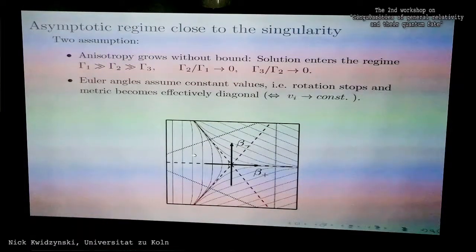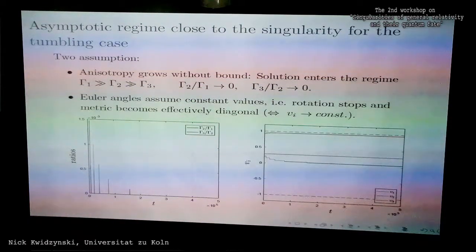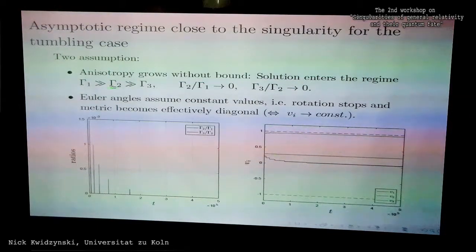This assumption basically states that the solution ends up somewhere in this triangle here. If we change the ordering of indices, we just basically choose another triangle. Here's a plot which corresponds to the Kasner epoch which I've shown you before. I've plotted here the ratios gamma 2 over gamma 1 and gamma 3 over gamma 2, and as we see, they really settle down. This plot indicates that this assumption is true. Here's a plot of the dust velocities—they vary mostly at the start of the simulation and then appear to settle down at some constant values. So these assumptions really appear to be true in this numerical simulation.